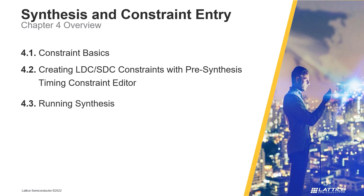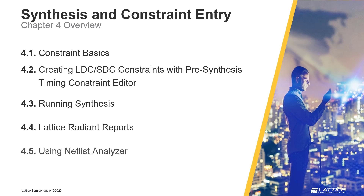In Section 3, called Running Synthesis, Radiant's Task Detail View and Process Toolbar are discussed, as well as how they can be used to run the project flow. In Section 4, Lattice Radiant Reports, we will discuss Radiant's generated reports. Finally, in Section 5, Using Netlist Analyzer, we will introduce Radiant's Netlist Analyzer and how it can be used to analyze a design's synthesized netlist.